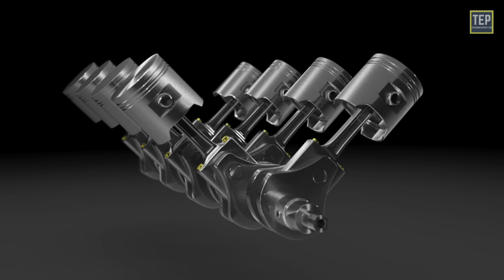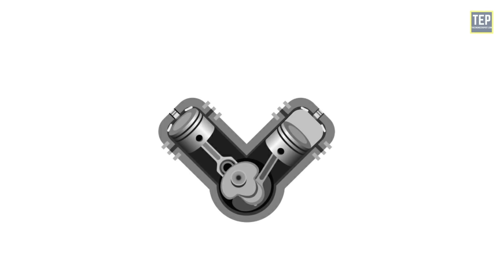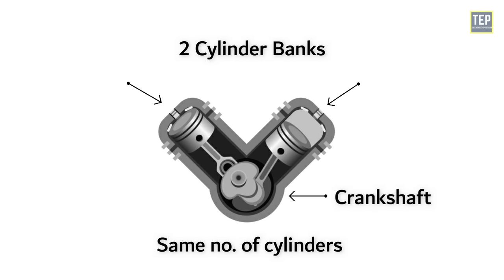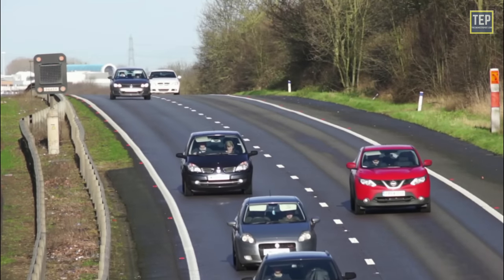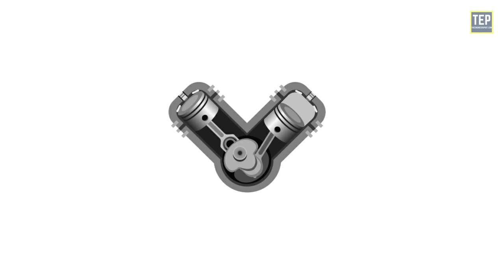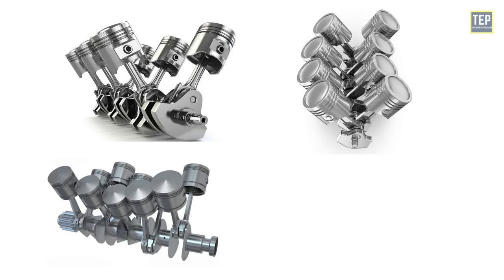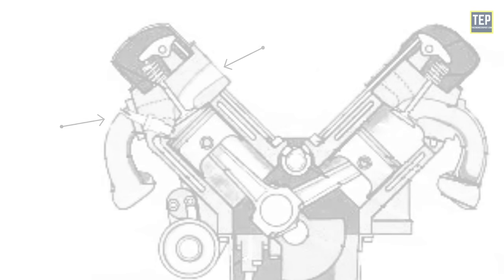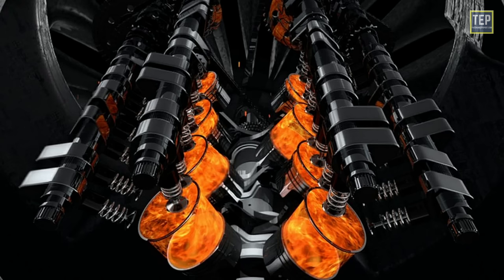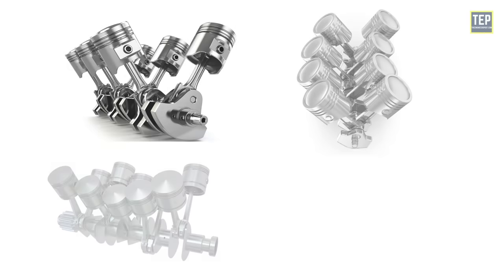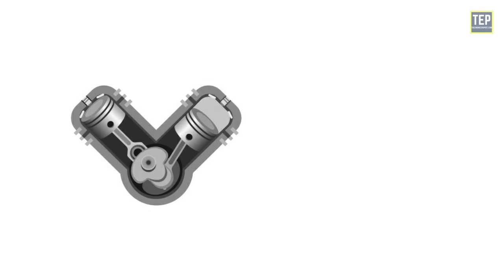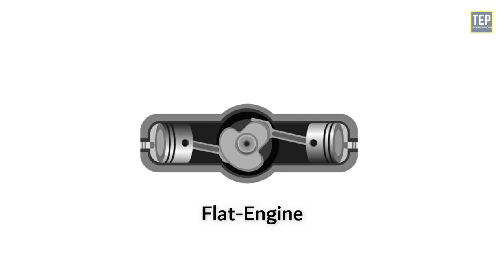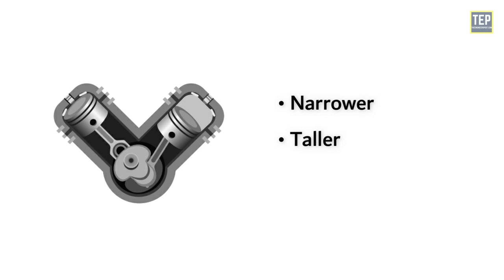V engines are one of the most common engine types, with cylinders configured in a V-shape. They consist of two cylinder banks, usually with the same number of cylinders, each bank connected to a common crankshaft. In most cars today, if the number of cylinders is more than four, it will most likely be a V-type arrangement. Typical examples are V6, V8, V10, or V12. The inlet and exhaust are properly segregated in this arrangement. V-type engines are very smooth and balanced, and due to their shorter length they are more compact than the inline type. Compared with the less common flat engine, a V engine is narrower, taller, and has a higher center of mass.